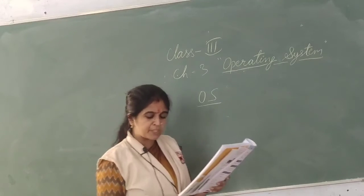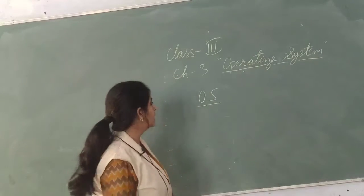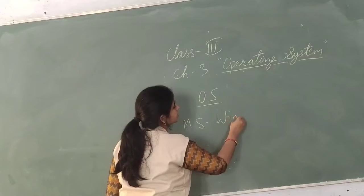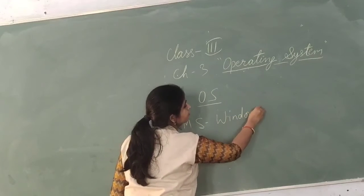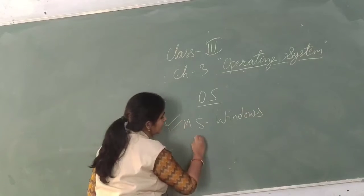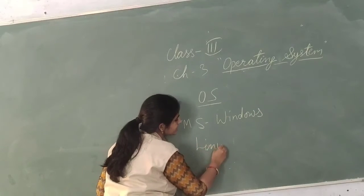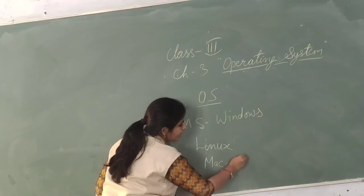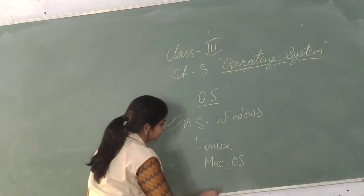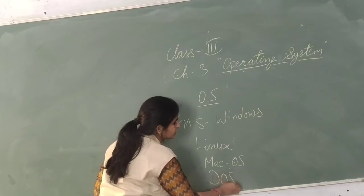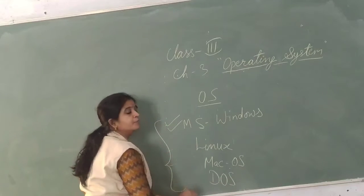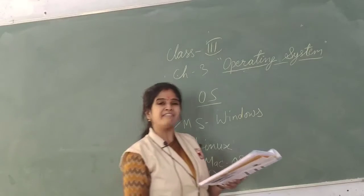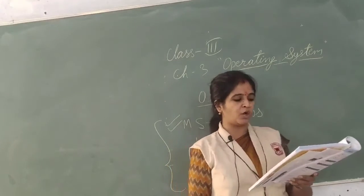Some examples of operating systems are Microsoft Windows, which we generally use, Linux, Mac OS (Mac operating system), and DOS (Disk Operating System). These are some popular operating systems for computers.